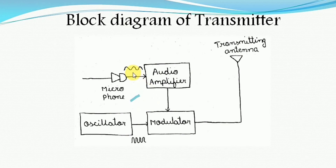The obtained electrical signal or audio signal is passed through an audio amplifier. The audio signal generated from the microphone is quite weak and hence it requires amplification. This job is accomplished by using an audio amplifier or a multi-stage audio amplifier. Finally the output of an audio amplifier is a signal with greater strength.